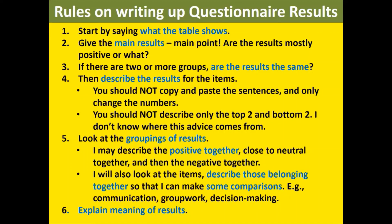If you have sections on communication, group work, and decision making, calculate the overall mean score for each and consider separating them into three different tables. After describing each section, bring the three together at the end to discuss which one they are most positive about. Always remember the context — Gen Y and Gen Z with respect to their studies and work — and bring it back when you do the explanation. Hopefully with this, you will know how to write up your results in a way that is meaningful for other people, not just for yourself. Thank you very much.